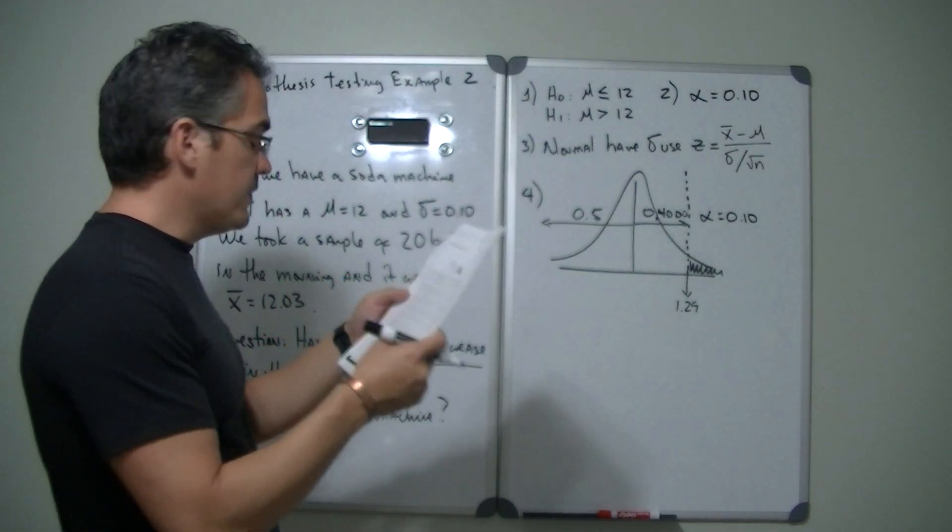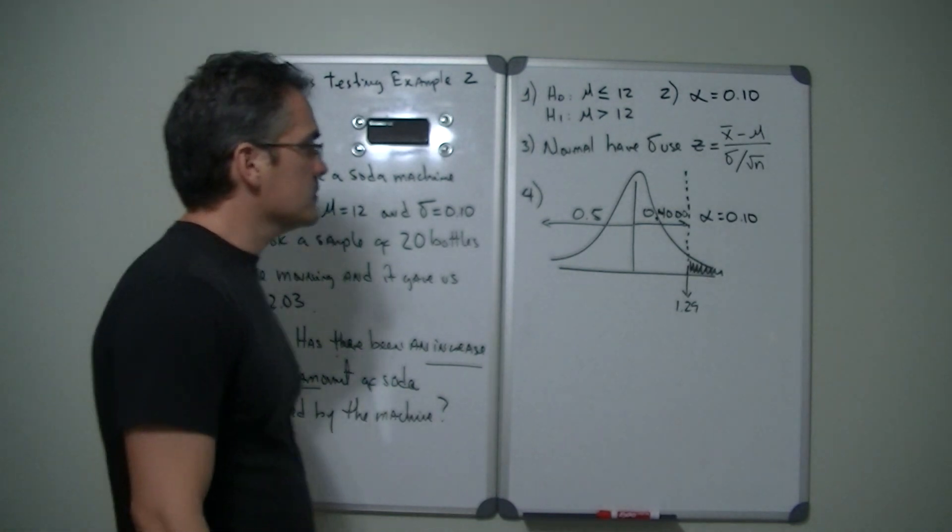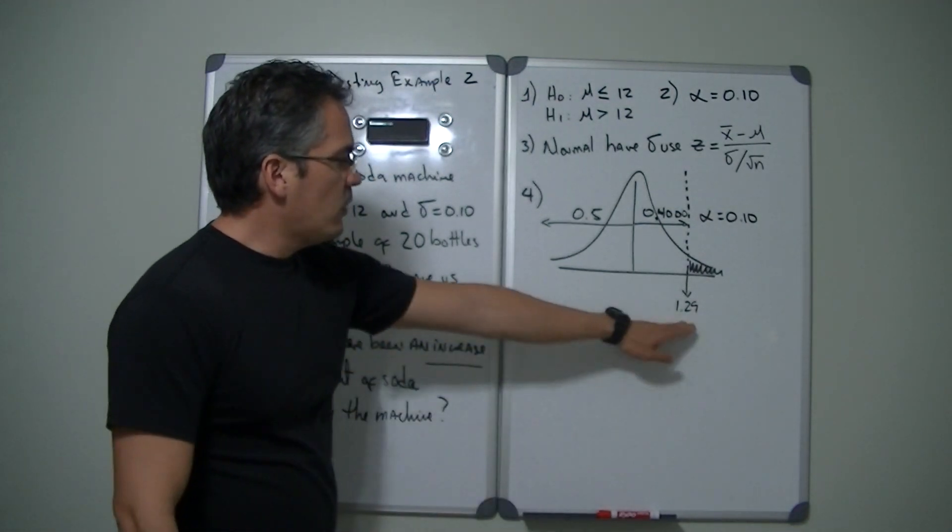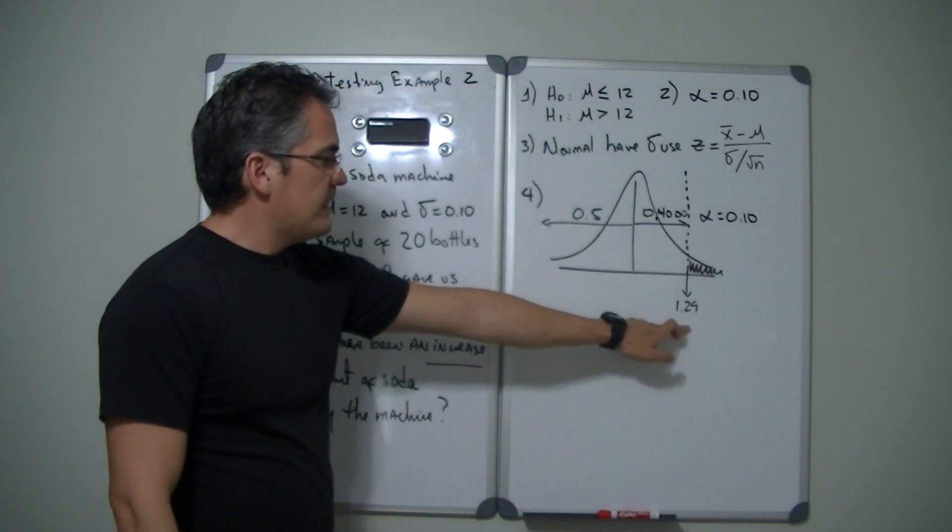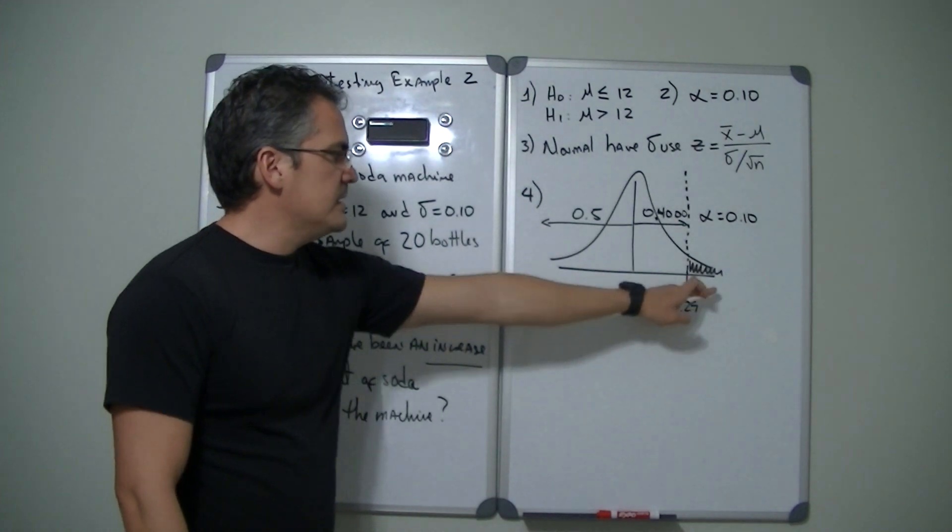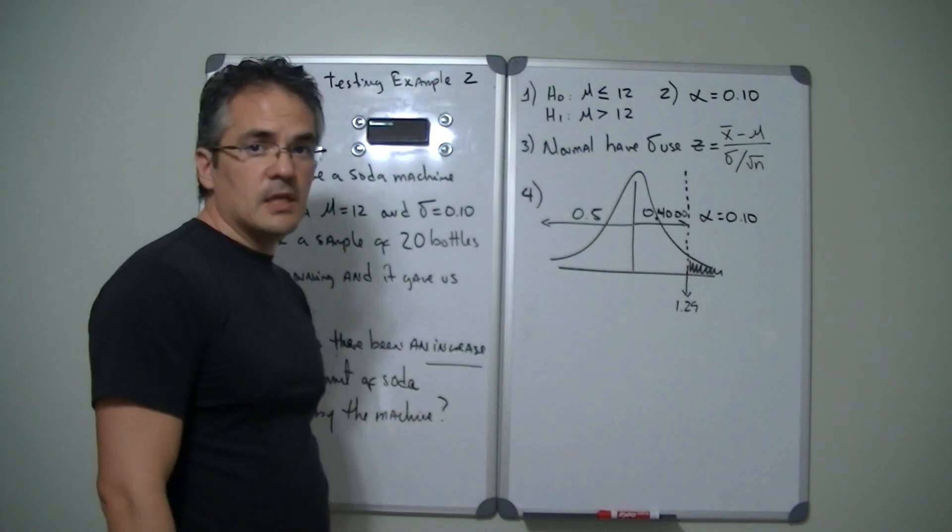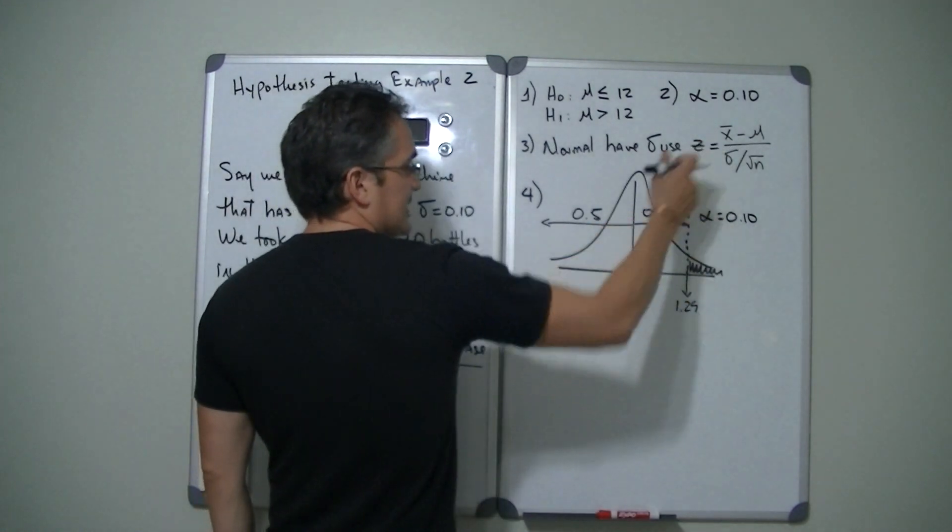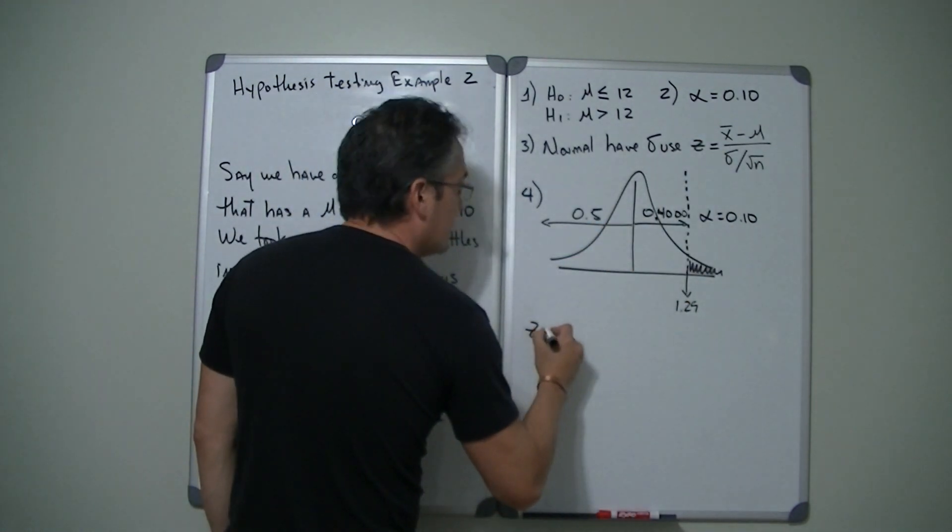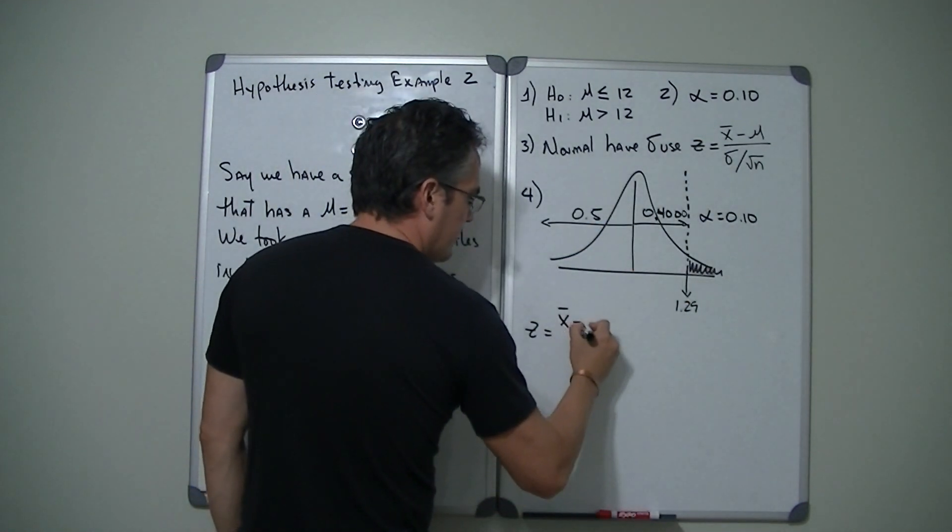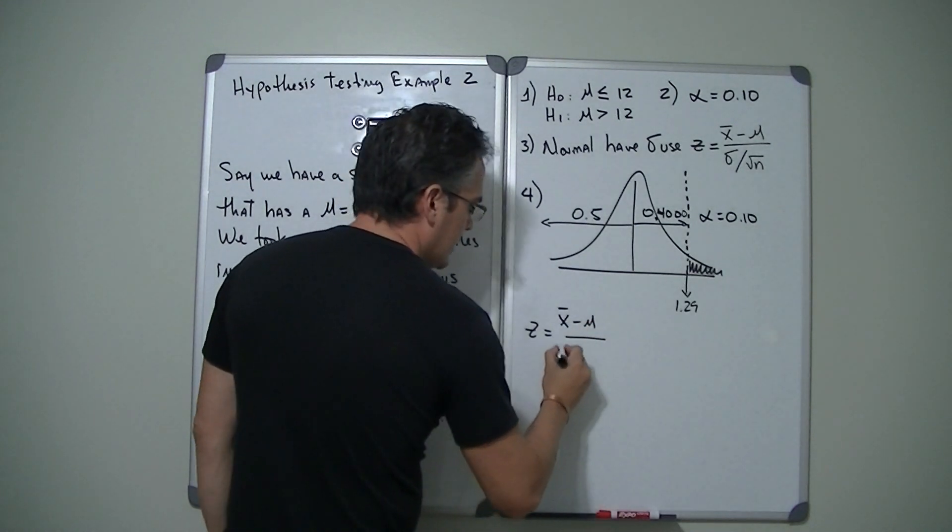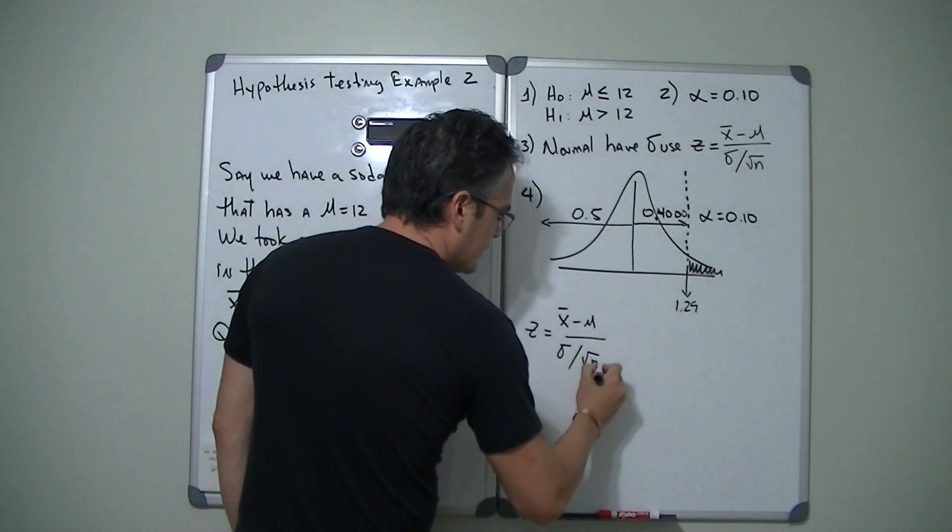Yep, 1.29. All right, so once we have our critical value, that value is going to tell us whether we're going to be inside or outside that rejection area. So after we do that critical value we need to run our test statistic. So we got to do our z equals x bar minus mu over sigma divided by square root of n.